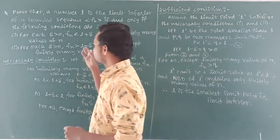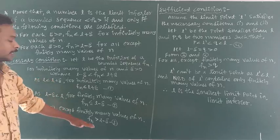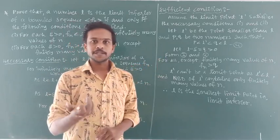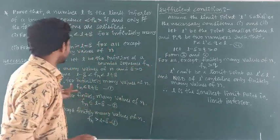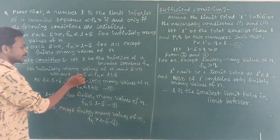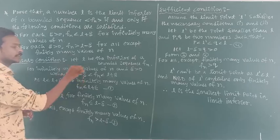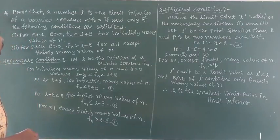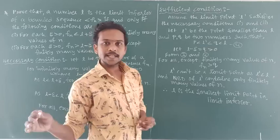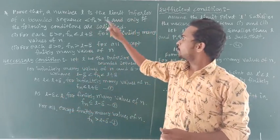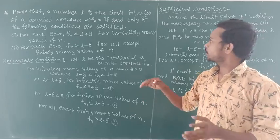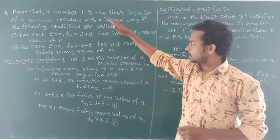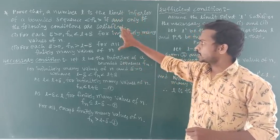This first necessary part is the same as yesterday's theorem up to here, but there is a slight difference compared to yesterday's theorem. If you listened to yesterday's theorem carefully, then you will understand this theorem easily. The question is: the number L is the limit inferior of a bounded sequence Fn if and only if the following conditions are satisfied. Here is a level with a limit inferior.